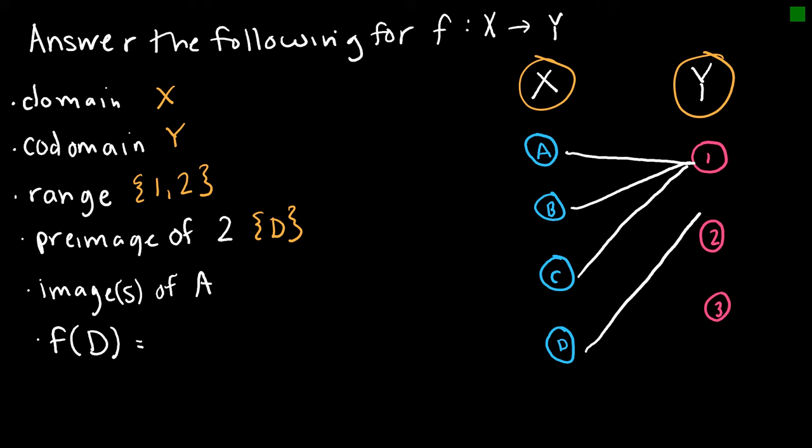And the images of A, which would be what does A map to. So the image or images of A, and that maps to 1. And f of D means what does D map to, and D maps to 2.